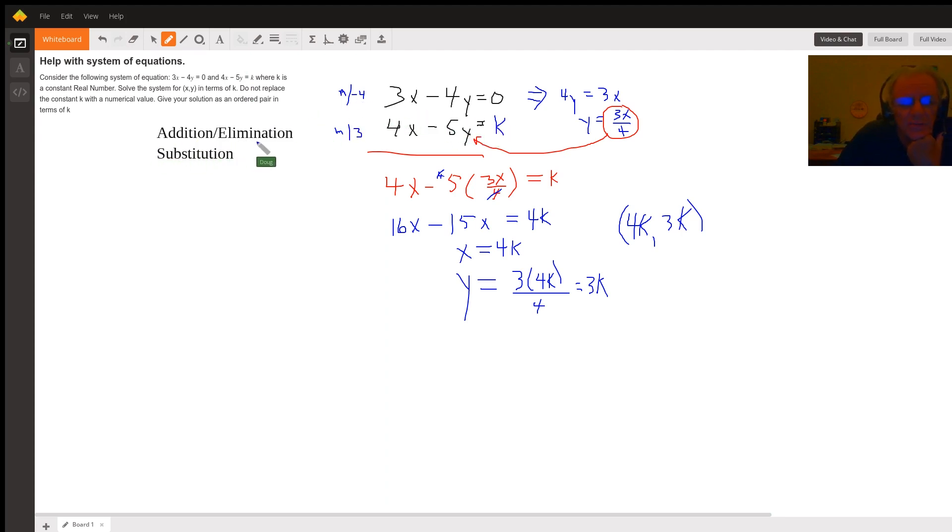If you were going to use the addition/elimination method, you might multiply the first equation by negative 4 and the second equation by 3. Doing so would give you negative 12x for the first equation and 12x for the second equation.